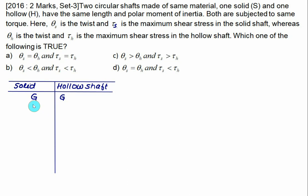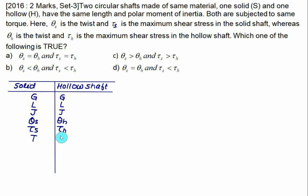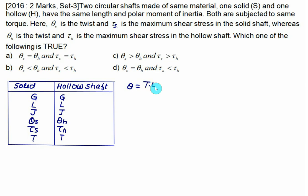Both shafts have the same length and polar moment of inertia, and the same material means the same G. The angle of twist θ = TL/(JG). Since torque T, length L, polar moment J, and modulus G are all the same for both shafts, θ_s = θ_h. This means either choice A or D is correct.